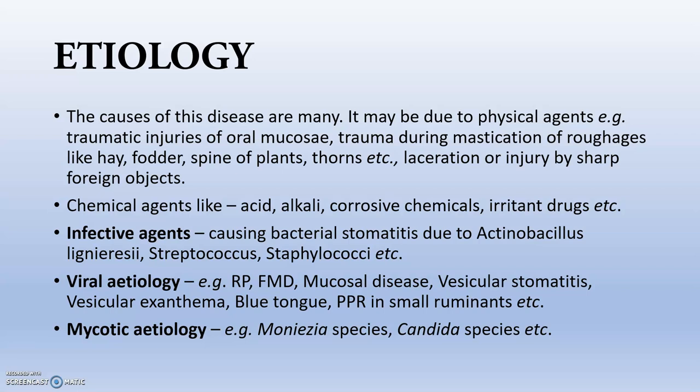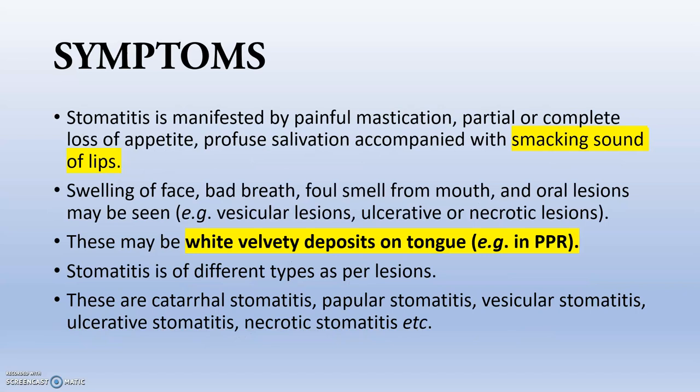Infectious agents include Actinobacillus lignieresii, Streptococcus, Staphylococcus, etc. In case of viral etiology, that includes rinderpest, FMD — in the case of FMD, vesicular stomatitis is very common — mucosal disease, vesicular stomatitis caused by rhabdovirus, vesicular exanthema, bluetongue in sheep, PPR, and other small ruminant diseases. For mycotic etiology, Monesia species and Candida species cause a typical stomatitis.